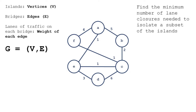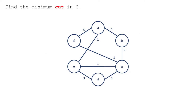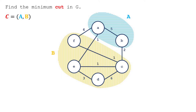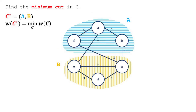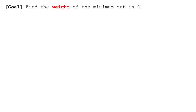The graph G will consist of vertices and edges — islands and bridges in our city. The problem of finding the minimum number of lane closures translates to finding the minimum cut in the graph. To define the minimum cut, we first define a cut. A cut C in the graph is a partition of the vertices. The weight of the cut is the sum of the weights on the crossing edges — edges where one endpoint is in one part and the other in the other. A minimum cut is a cut with minimum weight. In our example, the minimum cut has weight four. For simplicity, we'll present an algorithm which finds the weight of the minimum cut in G, but it can be modified to find the cut as well.